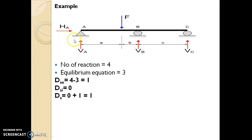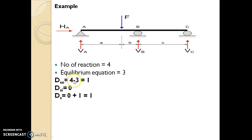Example for beams: This is a continuous beam in which one support is a hinge support, another is a roller support, and another is a roller support. Hinge support has two reactions, and each roller support has one reaction. So total number of reactions is 4. We know that the total number of equilibrium equations available is 3 for a two-dimensional structure. So Dse = R − S = 4 − 3 = 1, and internal indeterminacy for beams is 0. Total indeterminacy = external + internal = 1 + 0 = 1. So this structure is statically indeterminate by 1 degree.